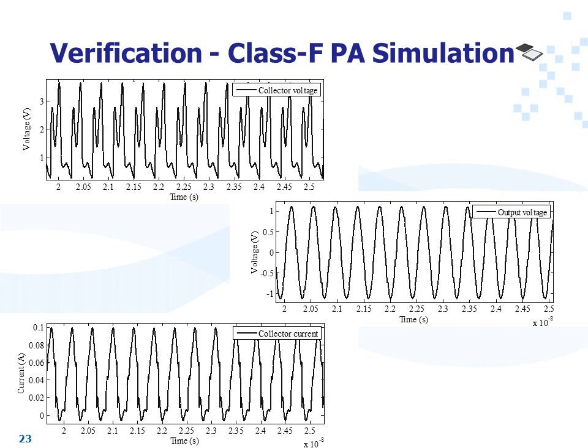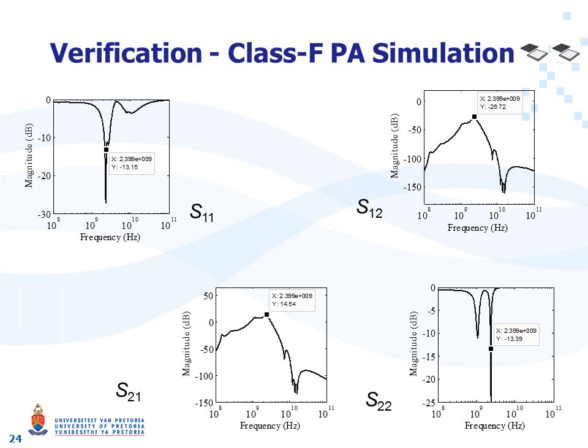Class F collector voltage and collector current waveforms are slightly easier to analyze than in the class E case. The theoretical shape of the collector voltage is a square wave, and the theoretical shape of the collector current is a half sine wave, and one can easily see that these two waveforms correspond to their theoretical shapes. The output voltage waveform is again sinusoidal due to filtering and impedance matching. The class F S-parameters show similar results: S21 shows good forward gain, S22 shows good output impedance matching, S11 shows good input impedance matching done by cut-and-try, and S12 shows no gain in the reverse direction.